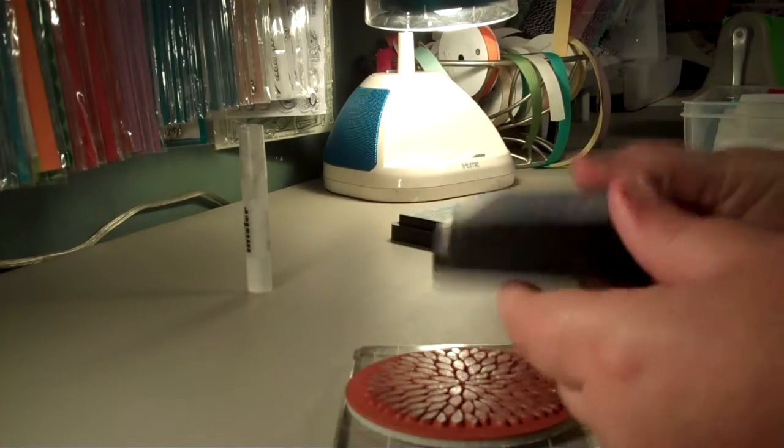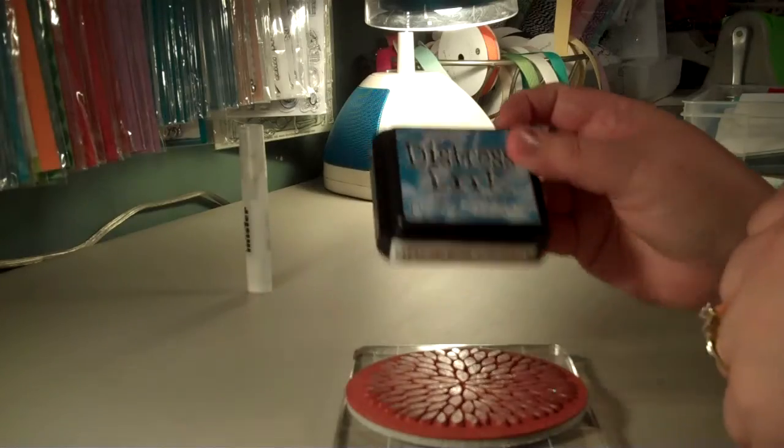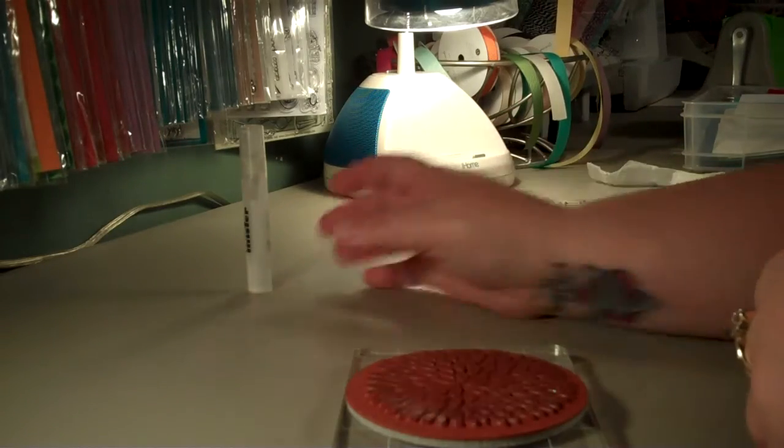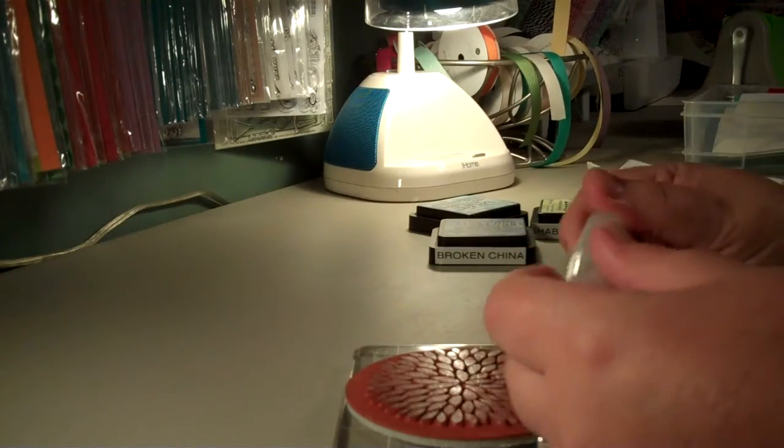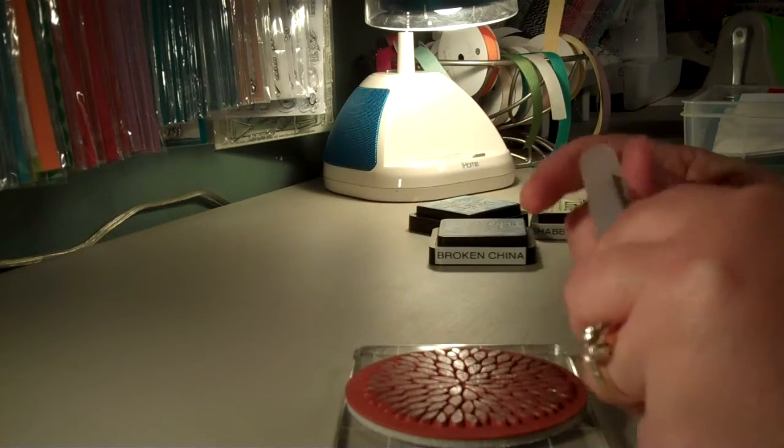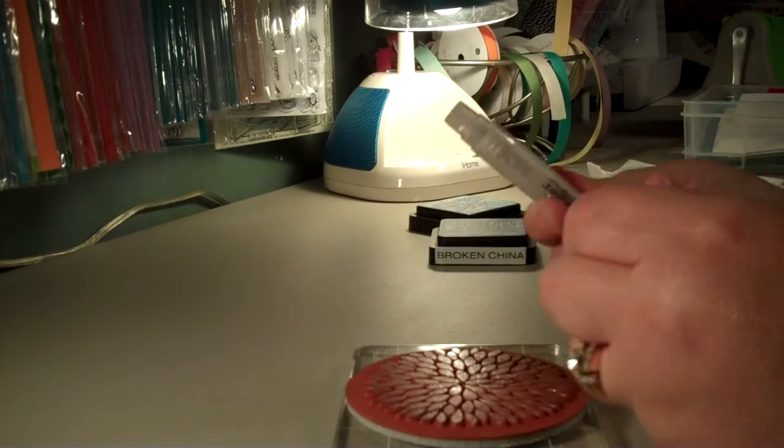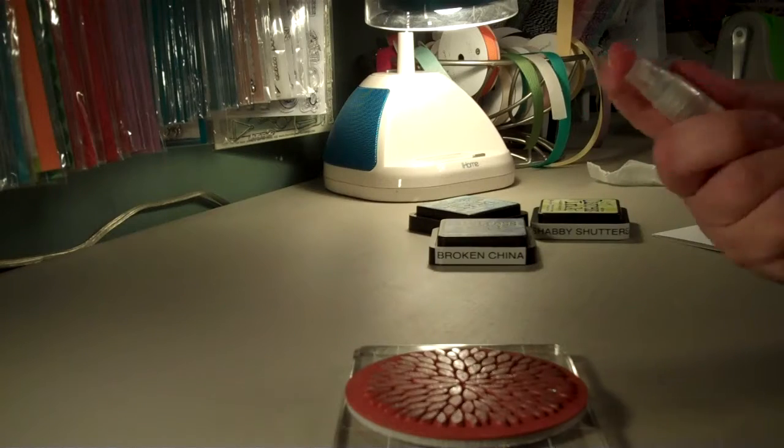If you want it a little bit darker, you can do Broken China, but I use Tumbled Glass. Then I use my mini mister from Ranger—love this, it gives a good mist with your water.